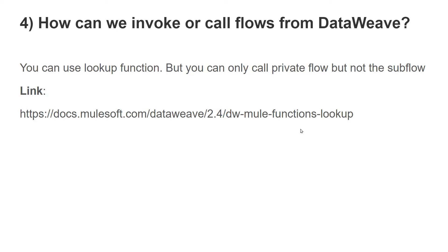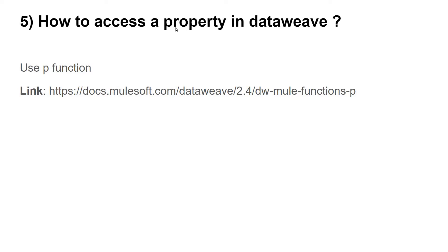The fifth question is: how to access a property in DataWeave? We can use the p() function. By using the p() function, we can refer to a property that is defined in the property file. We'll also see a demo on the same.